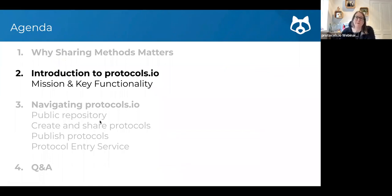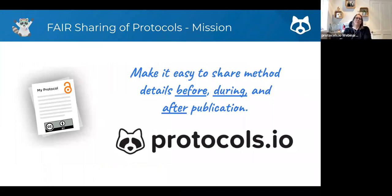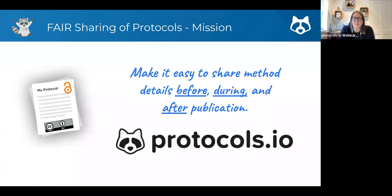protocols.io is a tool with a very simple mission: we want to make it easy to share method details before, during and after publication. A lot of people know of protocols.io as an open access repository, and many people do publish protocols publicly there. But the 'before and during' of this mission is less well appreciated — it's very much about allowing researchers to keep notes on protocols as they develop them, as they repeat experiments and tweak and optimize. You can store all that information as a protocol or method evolves, and record all the runs of experiments with timestamped run records.